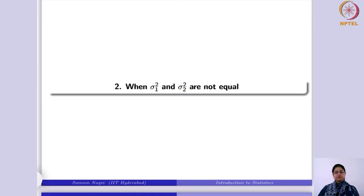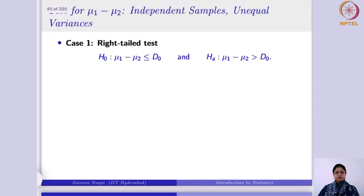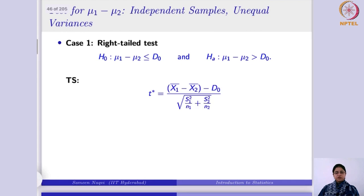In many situations the two variances are not equal. If the two variances are not equal, you cannot use the pooled sample variance concept — you have to treat S₁² and S₂² separately. For the right tail test with unequal variances, the alternative remains μ₁ − μ₂ > d₀, but the test statistic is different: it uses separate S₁² and S₂² rather than a pooled estimate.